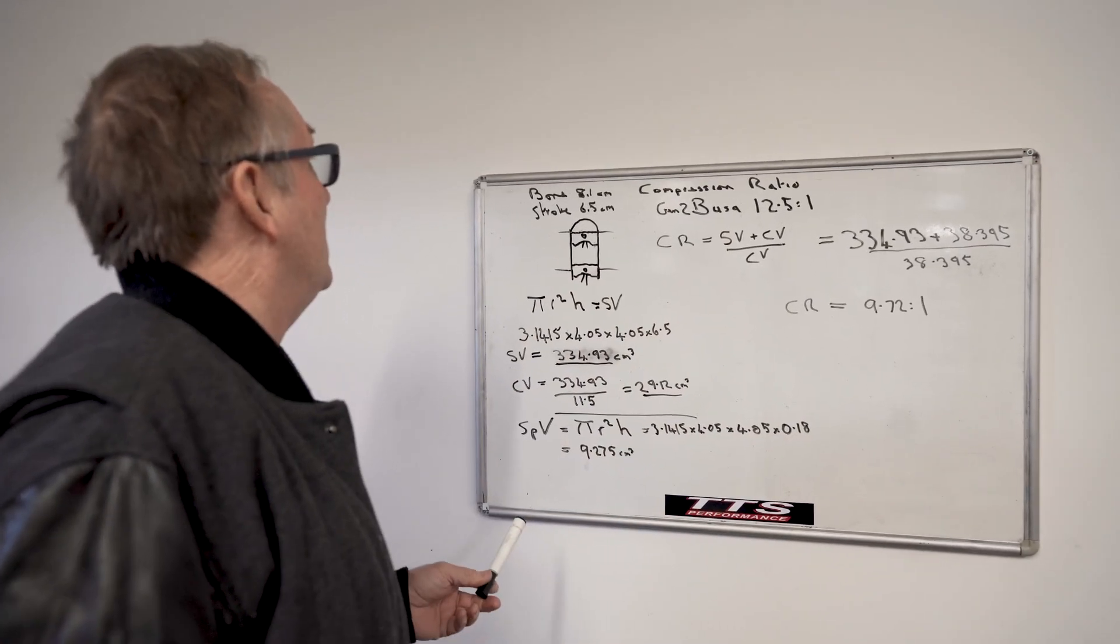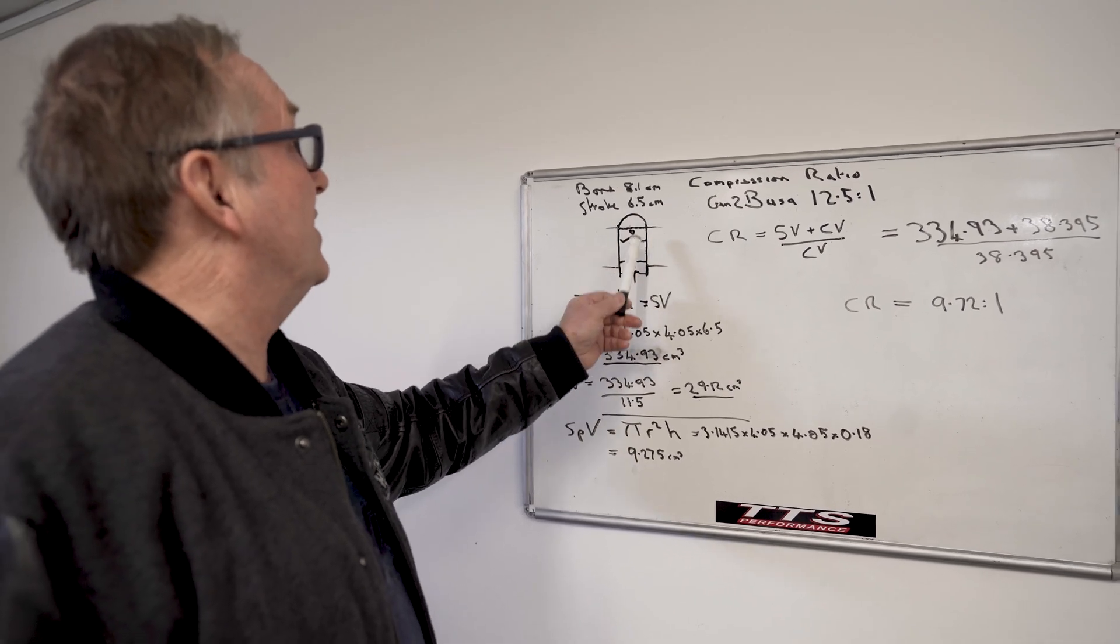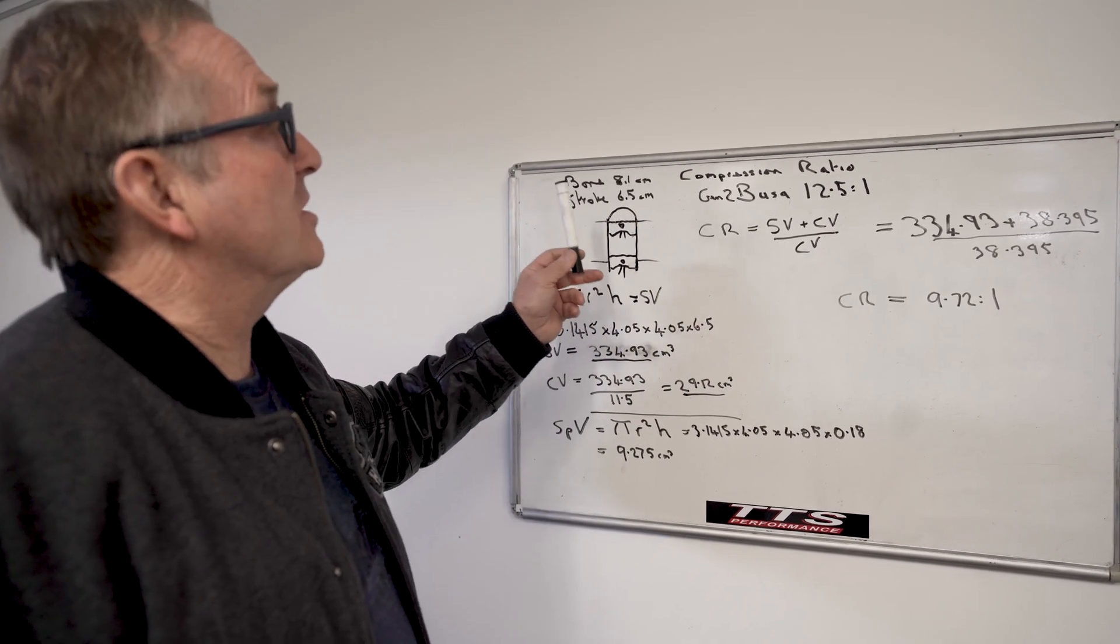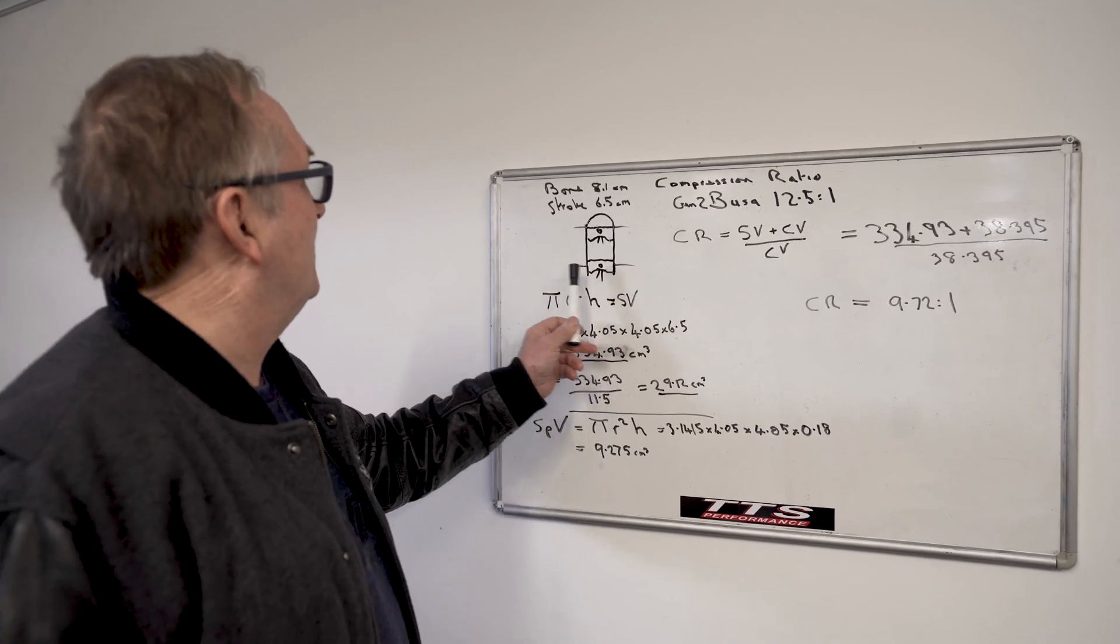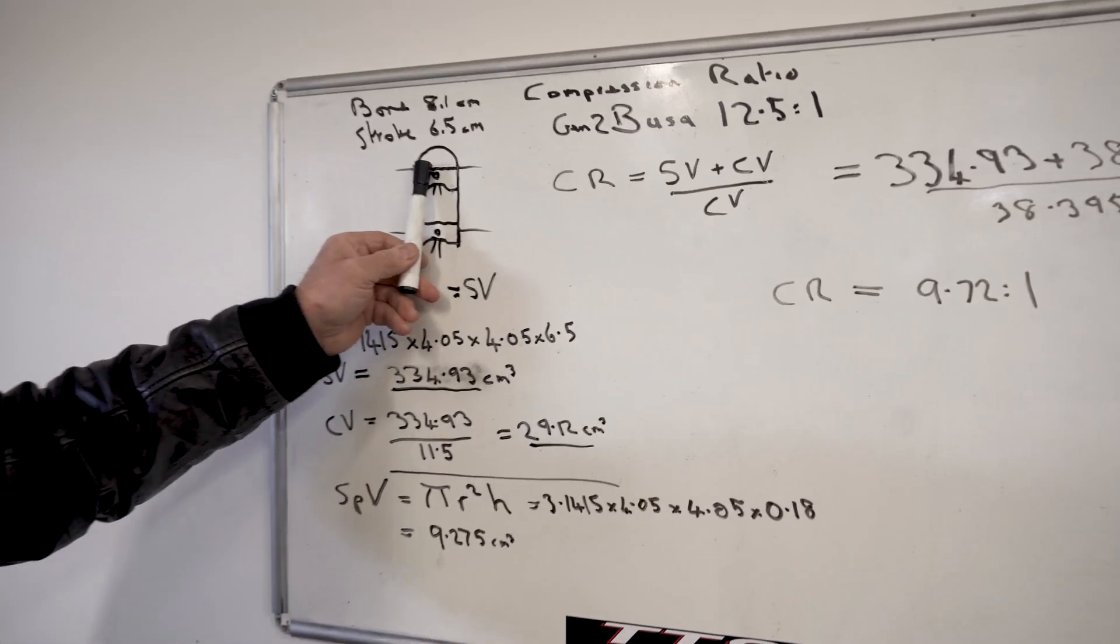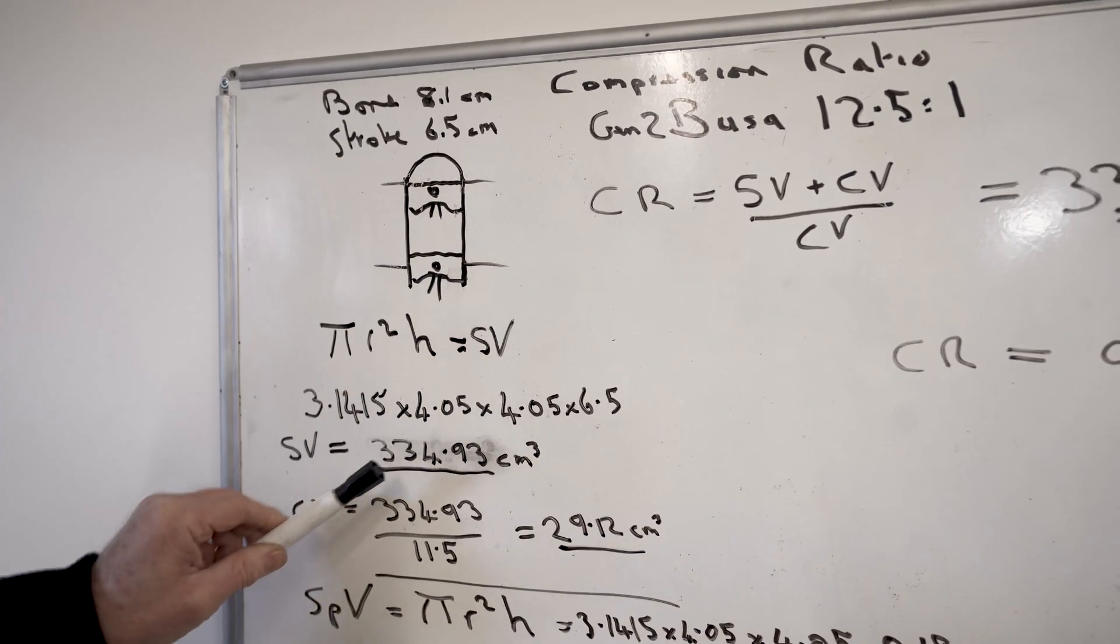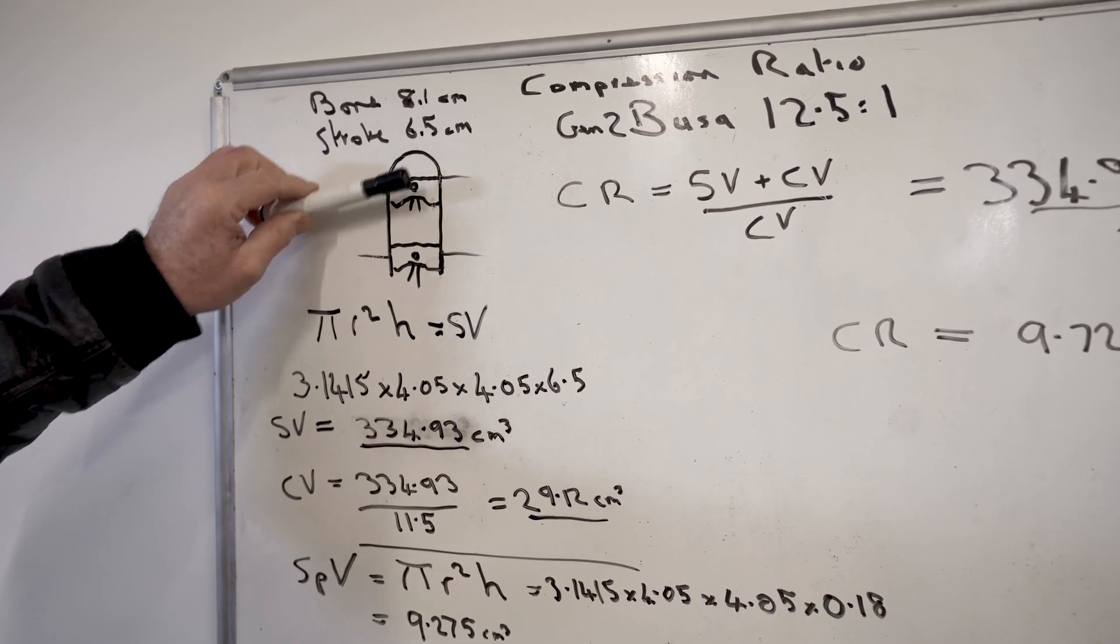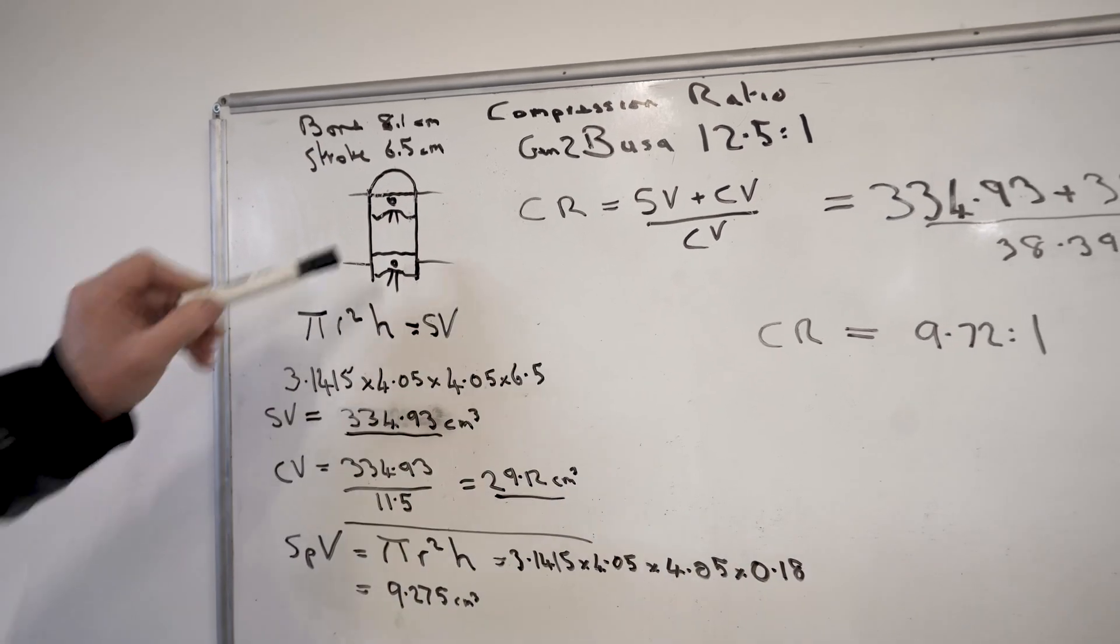So we've got to work out how much more volume we need in the compressed area, the top there where the piston doesn't go, the compressed volume, how much bigger that's got to be to bring the compression ratio down. So we've decided that putting a 2mm spacer under the barrel, down here, will increase the compressed volume because obviously the piston won't go up quite so high. The swept volume will stay the same, but it'll be in a slightly different part of the bore. So the swept volume will stay at 334.93, but the compressed volume will be increased because the spacer will lift it away from the piston.